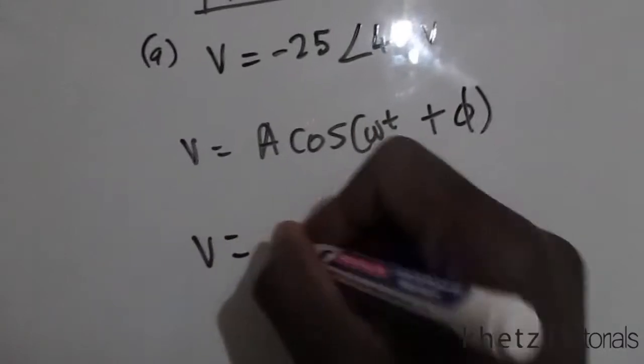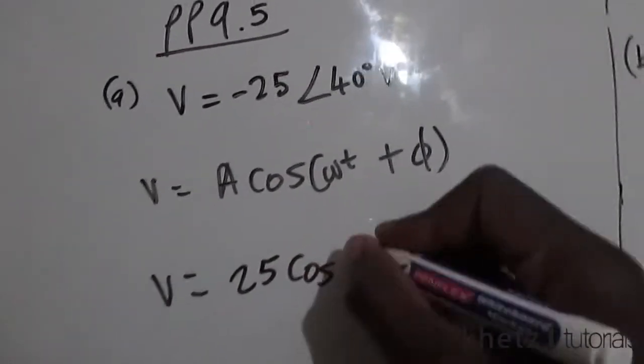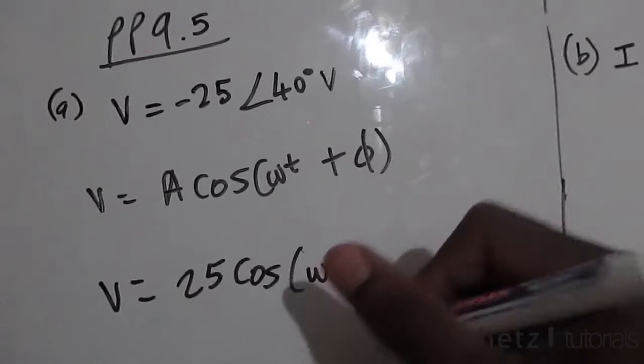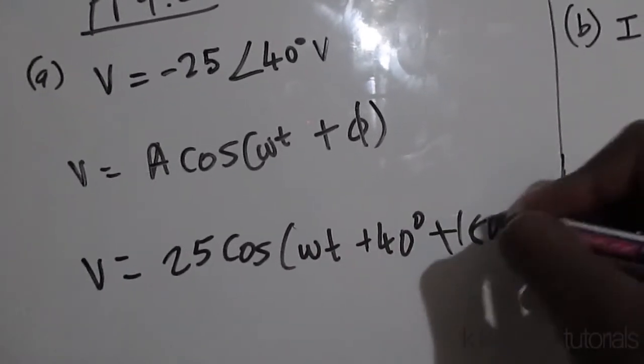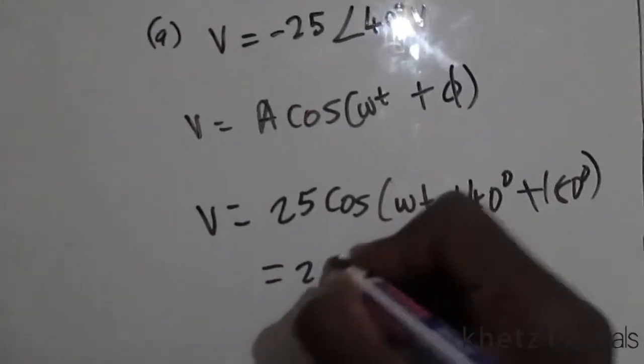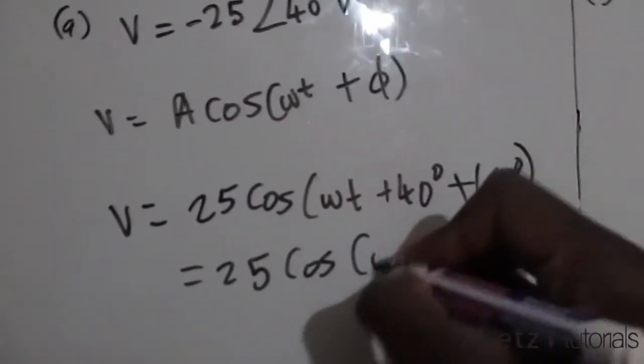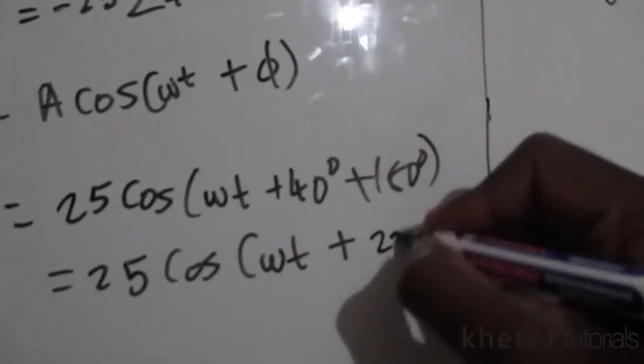So your result will either be 25cos(ωt + 40° + 180°), which will give you 25cos(ωt + 220°).